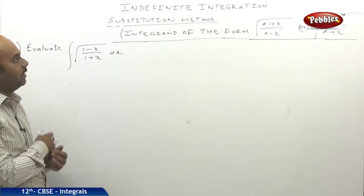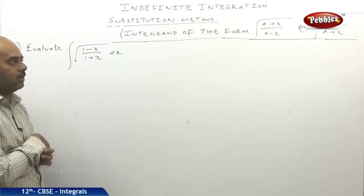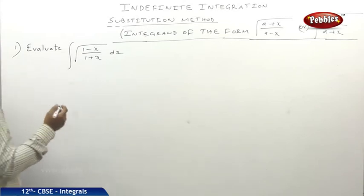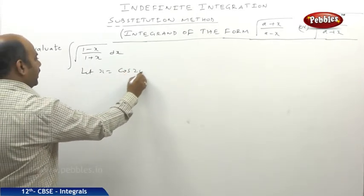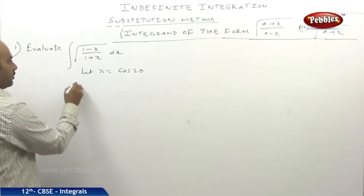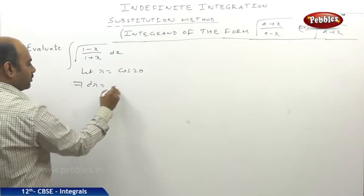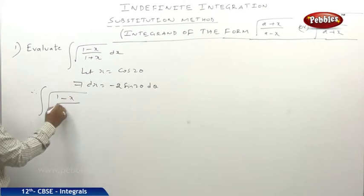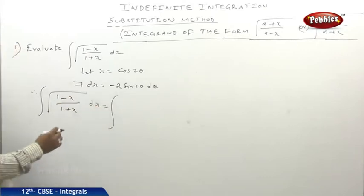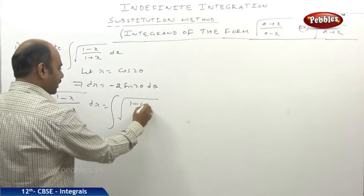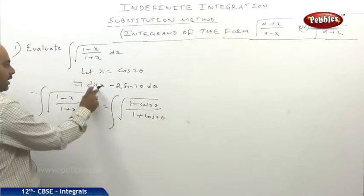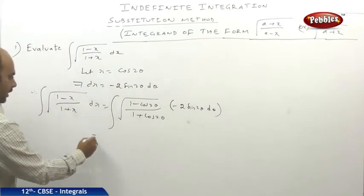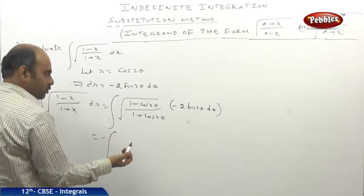Under substitution method, we shall see another category: the integral of under root of (a plus x)/(a minus x) or under root of (a minus x)/(a plus x). This is only a long answer question pattern. Whenever this kind of problem comes, always put x equal to a cos 2θ. Here a equals 1, so x equals cos 2θ, and dx equals minus 2 sin 2θ dθ. The integral of under root of (1 minus cos 2θ)/(1 plus cos 2θ) times minus 2 sin 2θ dθ.